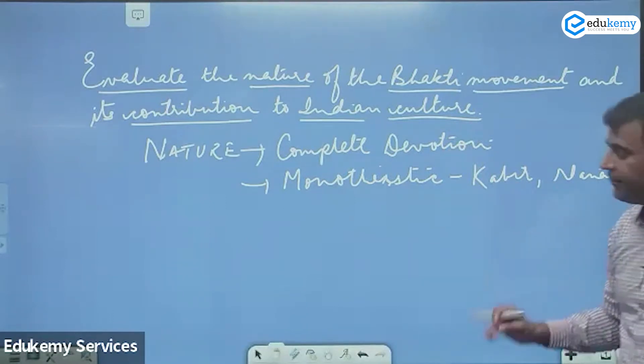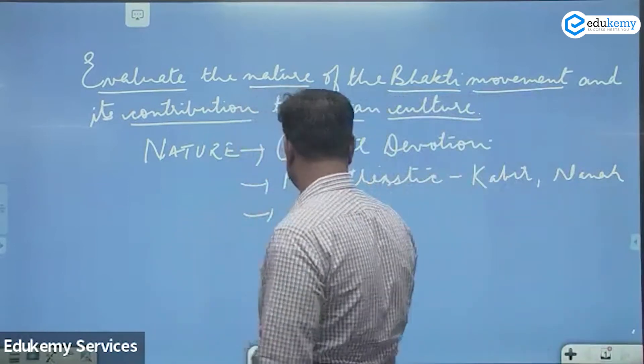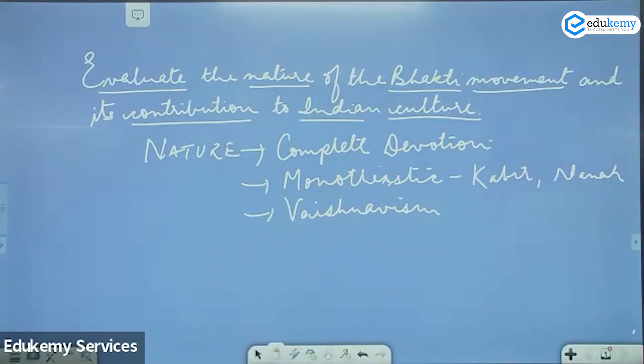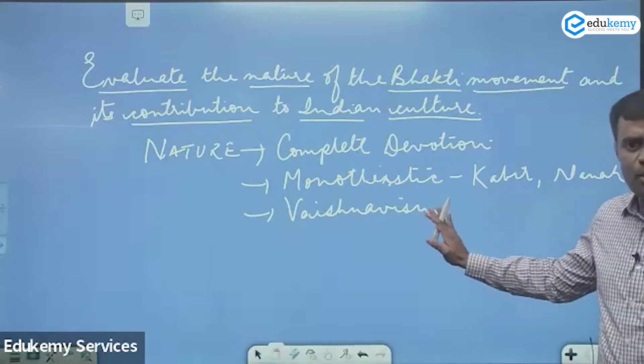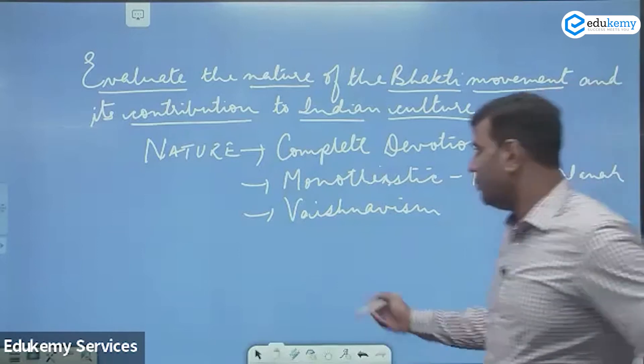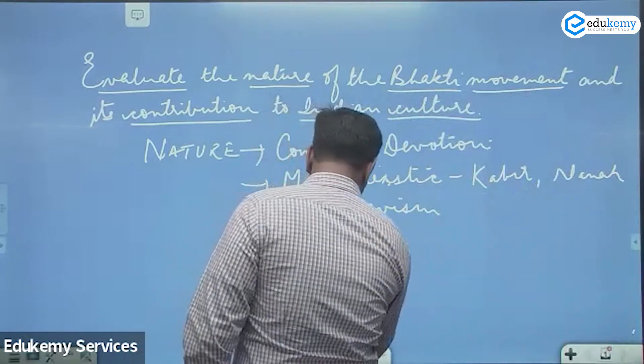Second major character of Bhakti movement is Vaishnavism. In northern part of India, all the Bhakti leaders promoted worship of Lord Vishnu in different avatars. Mirabai worshipped Lord Krishna, Maratha Dham worshipped Vithoba and constructed temple of Pandarpur. Surdas worshipped Lord Krishna, Chaitanya Mahaprabhu worshipped Lord Krishna. In Assam also Lord Krishna was worshiped, meaning thereby they worshipped Lord Krishna as a part of Lord Vishnu. So Bhakti movement was marked by Vaishnavism.